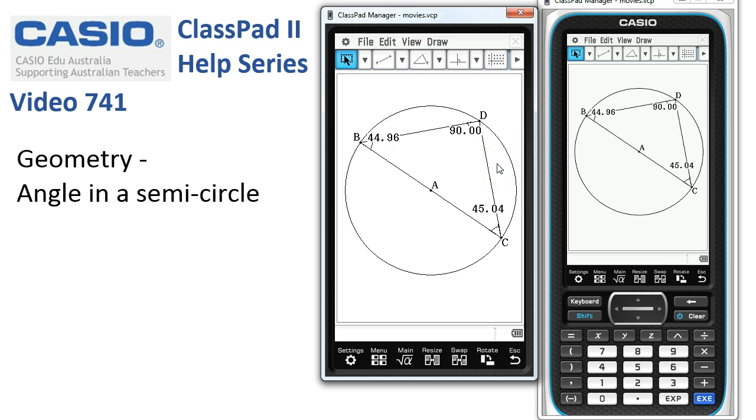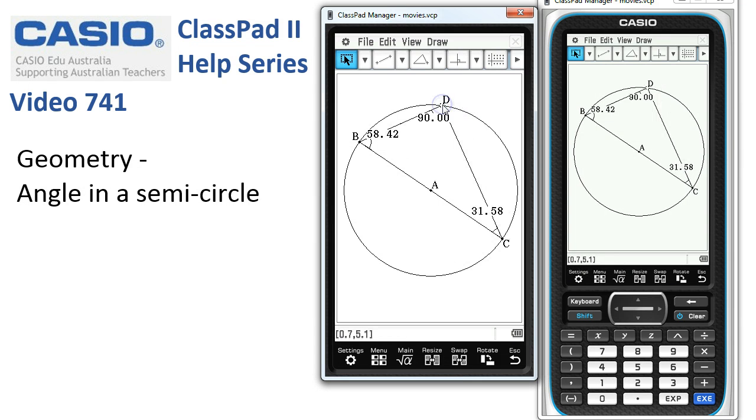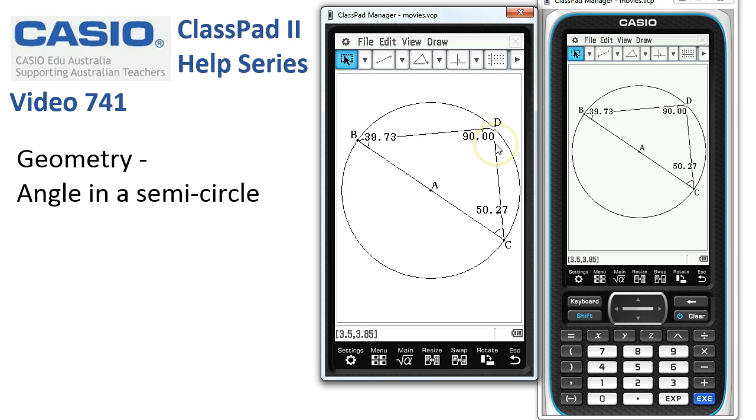Now what's interesting here is if we start moving D around the edge of our circle here, these two angles are changing, but what do you notice about the angle in the semi-circle here?